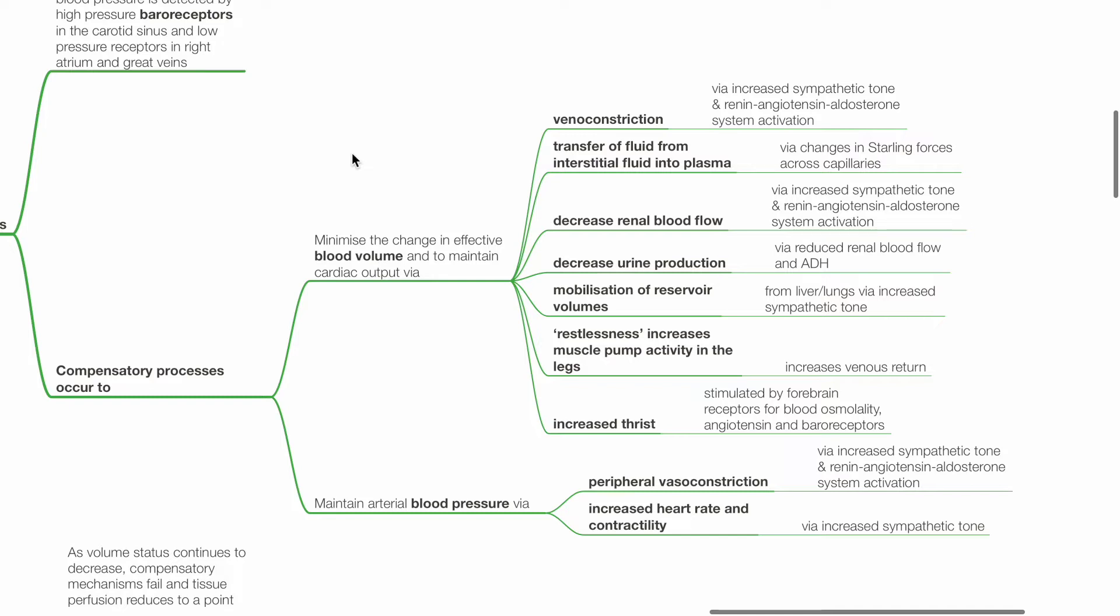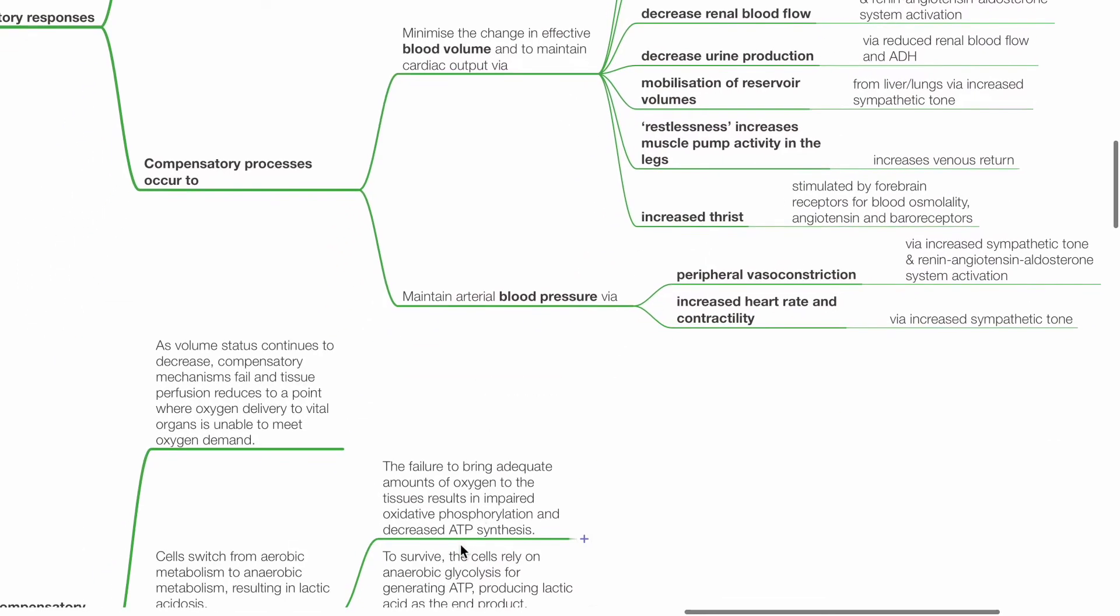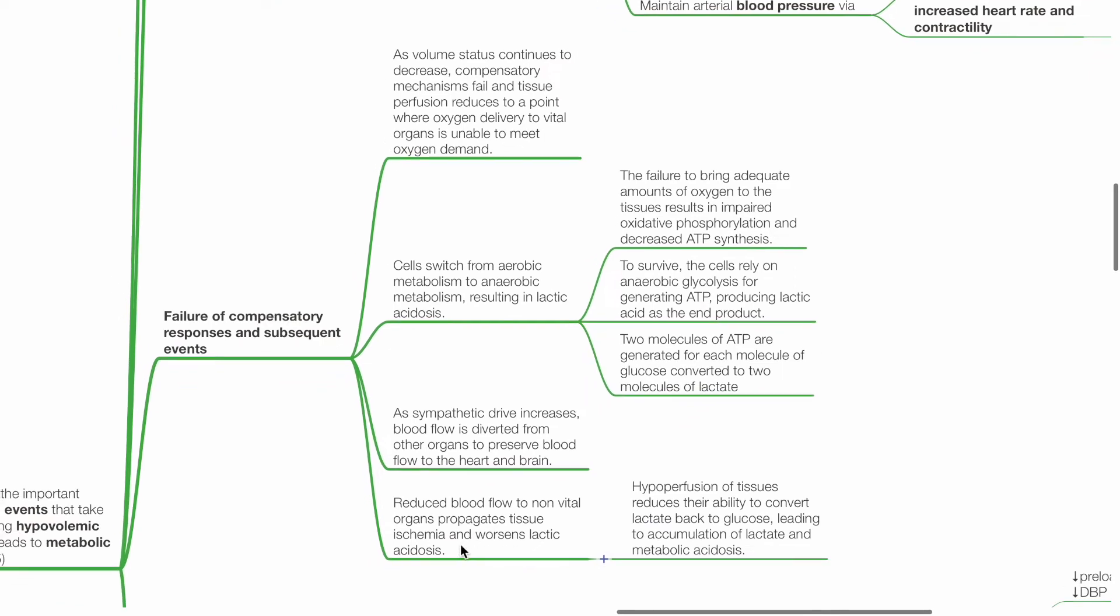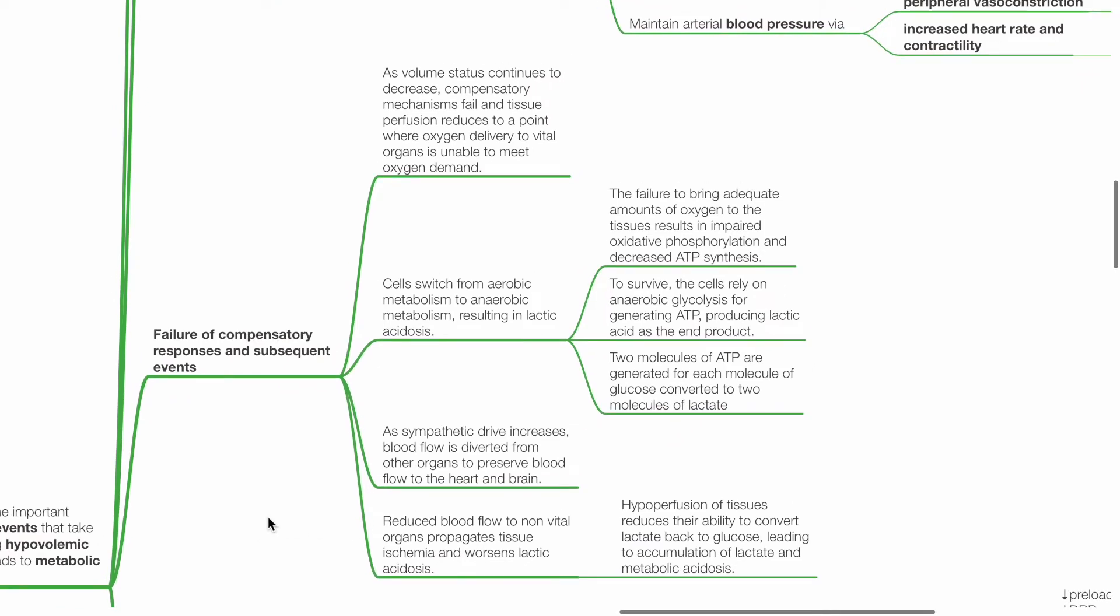Restlessness increases muscle pump activity in the legs which increases venous return. Increased thirst is stimulated by forebrain receptors for blood osmolality, angiotensin and baroreceptors. Arterial blood pressure is maintained by peripheral vessel constriction via increased sympathetic tone and RAAS, and increased heart rate and contractility via increased sympathetic tone.